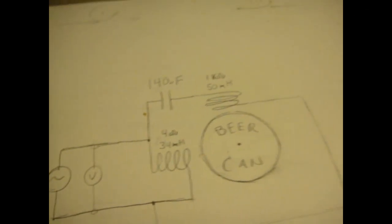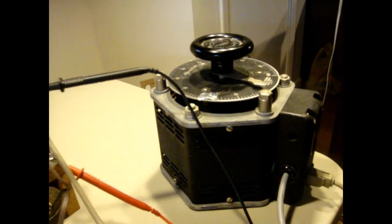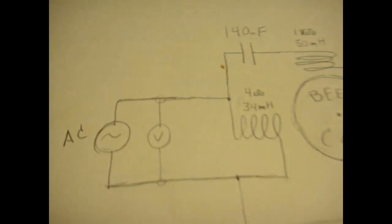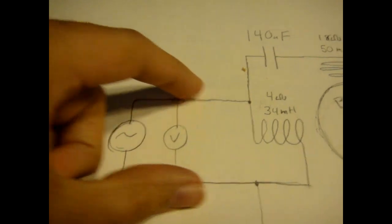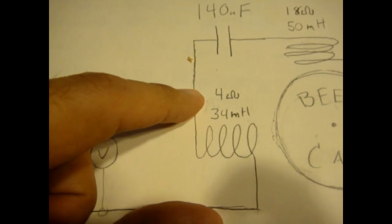And I control the power to my motor with this variac because if you just plugged it into the wall it would just overheat. And the power comes to our main coil here. It's a 4 ohm 34 millihenry coil.